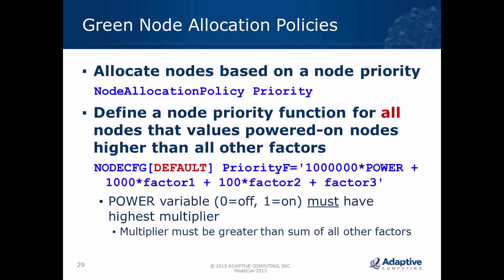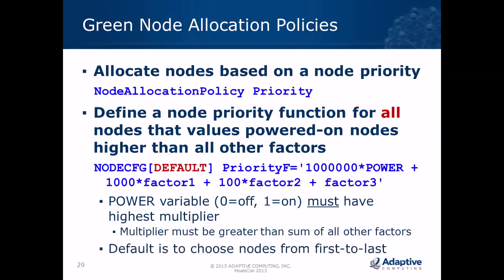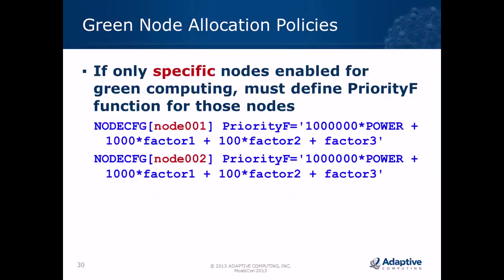We had a customer with nodes getting powered on when powered-on nodes were already available — they didn't understand what was happening. The problem was they weren't using the power variable to say choose from all powered-on nodes first and powered-off nodes last. That was missing from their priority F formula. If you're not applying green computing to all nodes, you'll need to define this priority F on all nodes so Moab uses them properly.